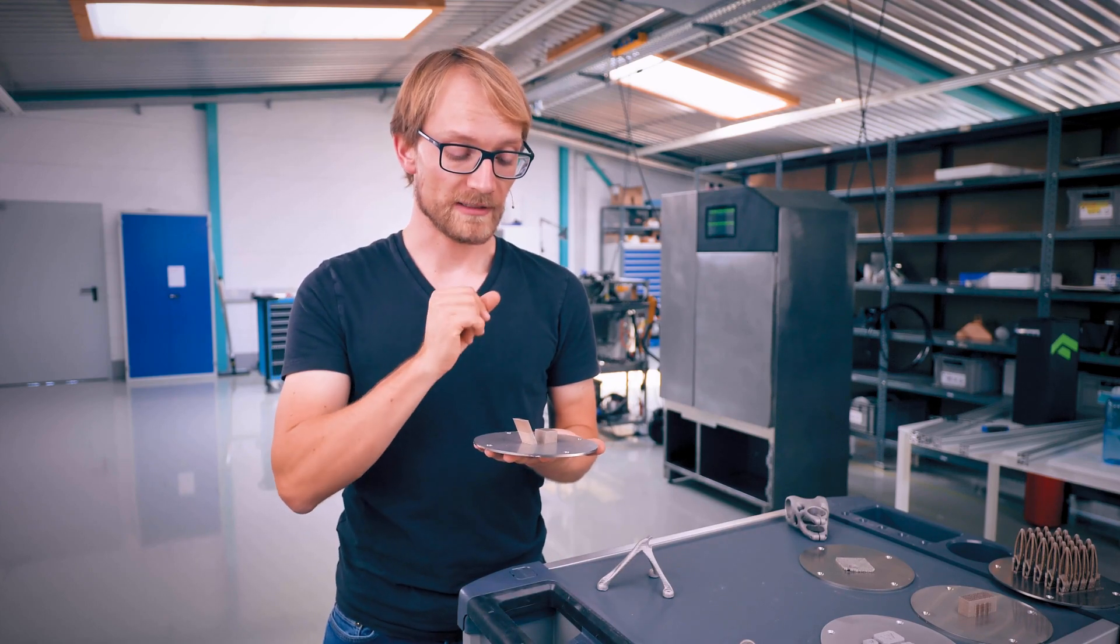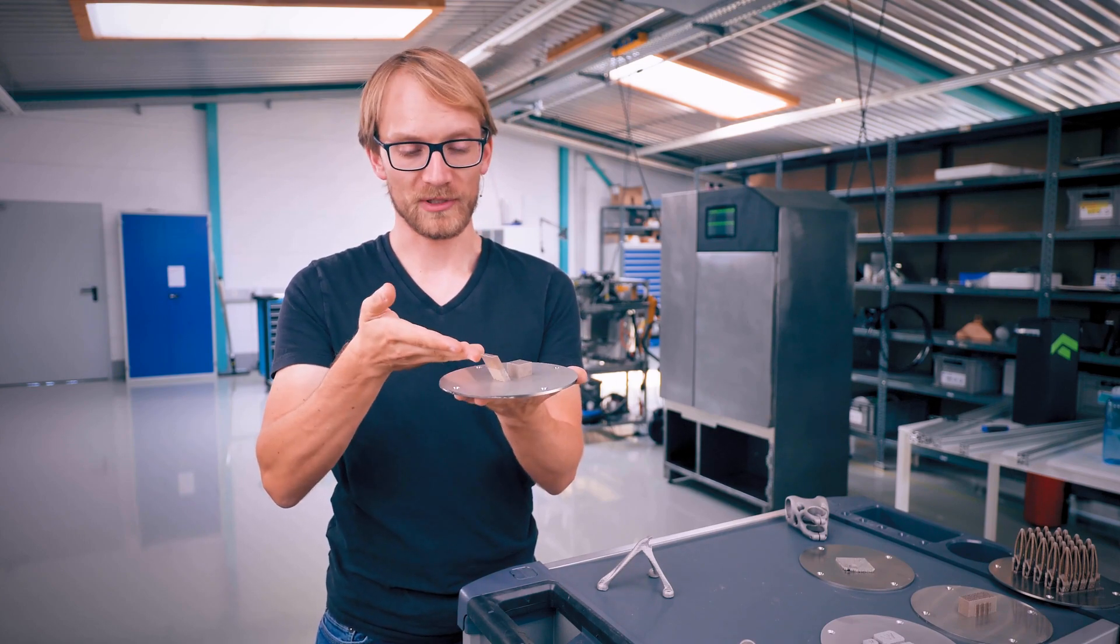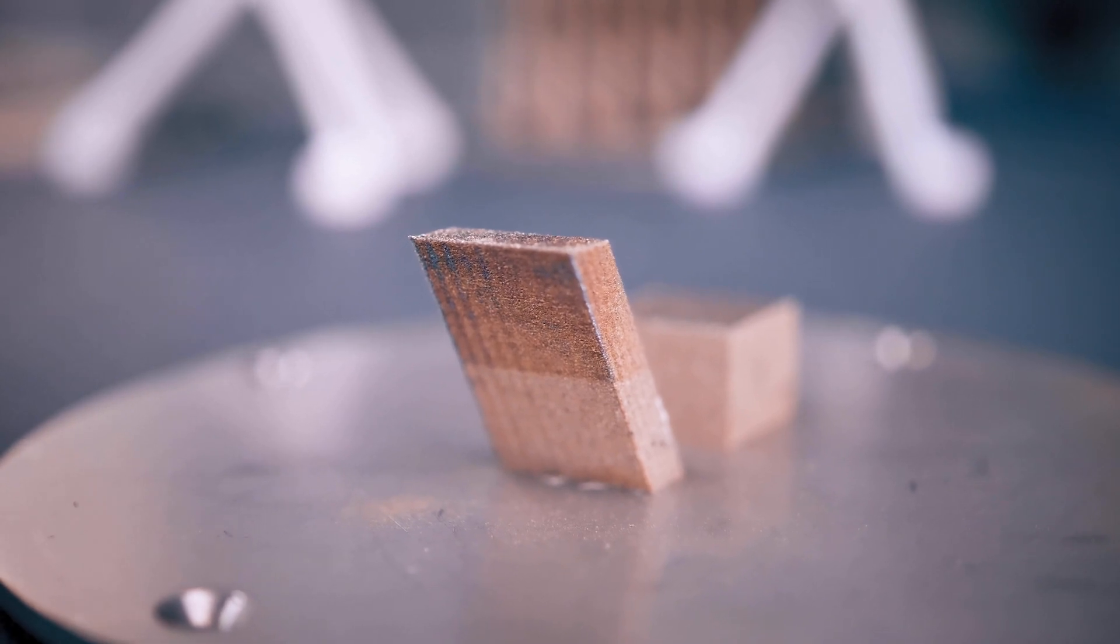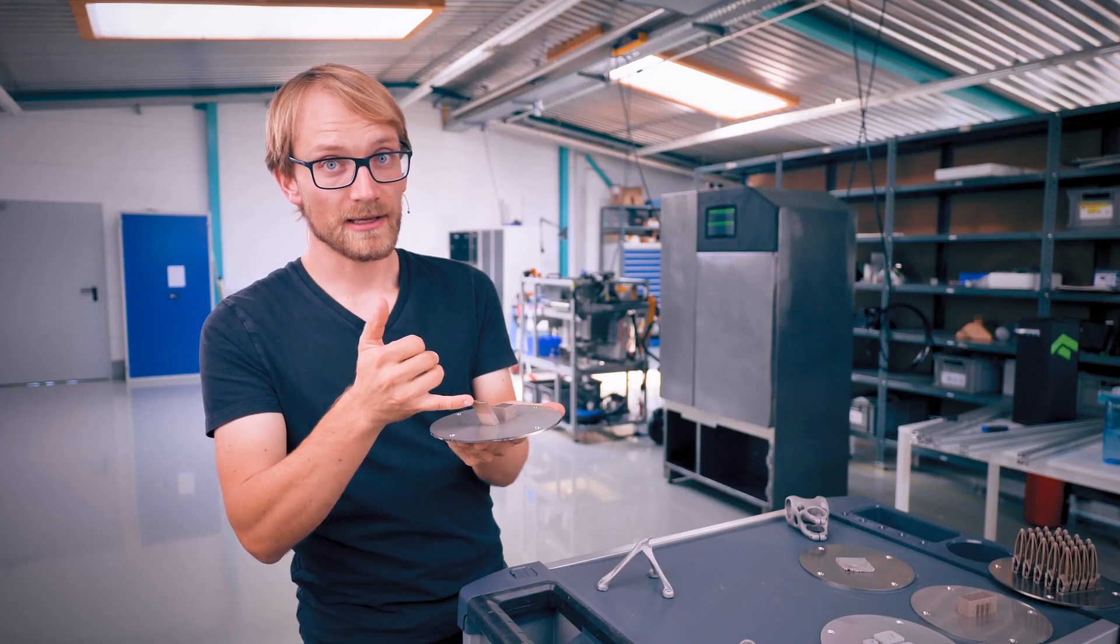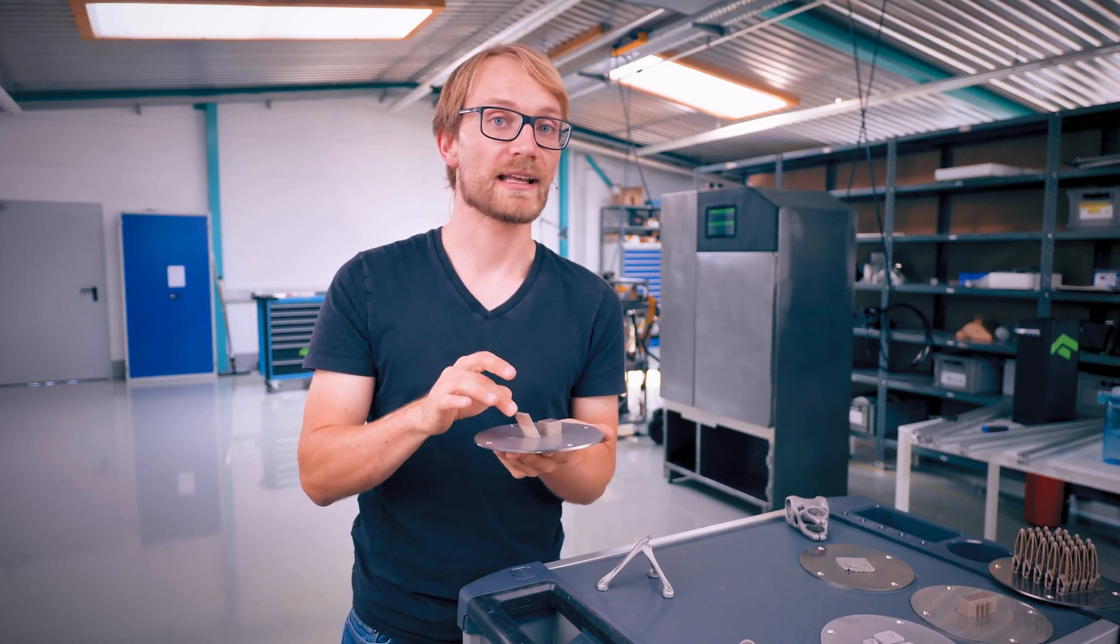Number one, overhangs. Overhangs are any area of a part that hangs over the edge of what's underneath it. Say, we're trying to print this part right here in this orientation, any area like the one on the underside here will only be partially supported by what's already been printed at that point.